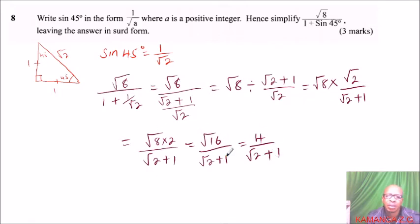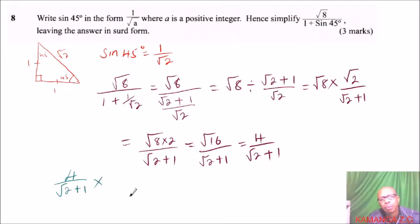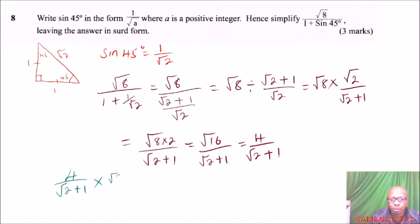Now this is in surd form, but we need to simplify to remove the surd in the denominator — what we call rationalizing the denominator. So we write 4 divided by root 2 plus 1. What we do is multiply by the conjugate of the denominator. The conjugate is the expression that gives us a whole number in the denominator — we change the sign. Here it is root 2 plus 1, so its conjugate is root 2 minus 1. We multiply by root 2 minus 1 over root 2 minus 1.